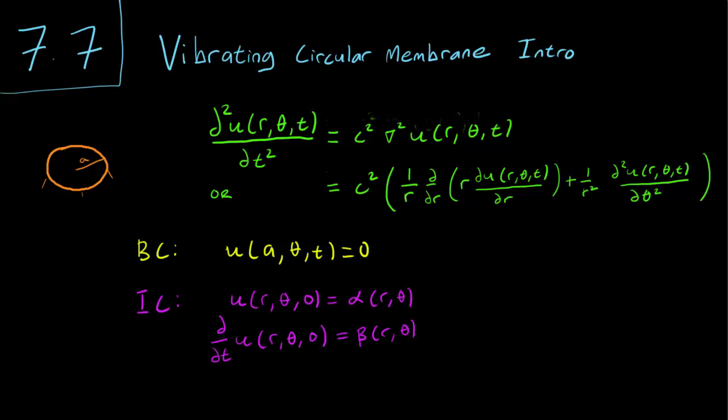We also have given initial conditions. We know the starting position and starting velocity of every point on the trampoline, given by the functions α(r,θ) and β(r,θ). Of course, since we are in polar coordinates, r lies between 0 and a, and θ lies between -π and π radians.